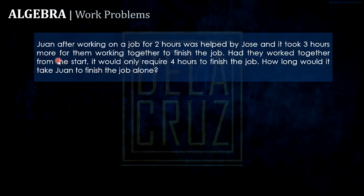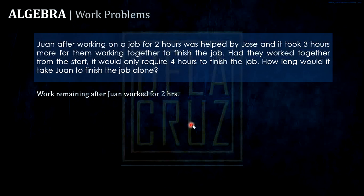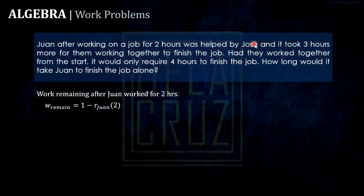The remaining work after Juan worked for two hours is: one work minus the work Juan did in two hours. That remaining work is then finished by Juan and Jose working together in three hours. So the remaining work equals the rate of Juan plus the rate of Jose, times three hours. We substitute this remaining work expression into the equation.